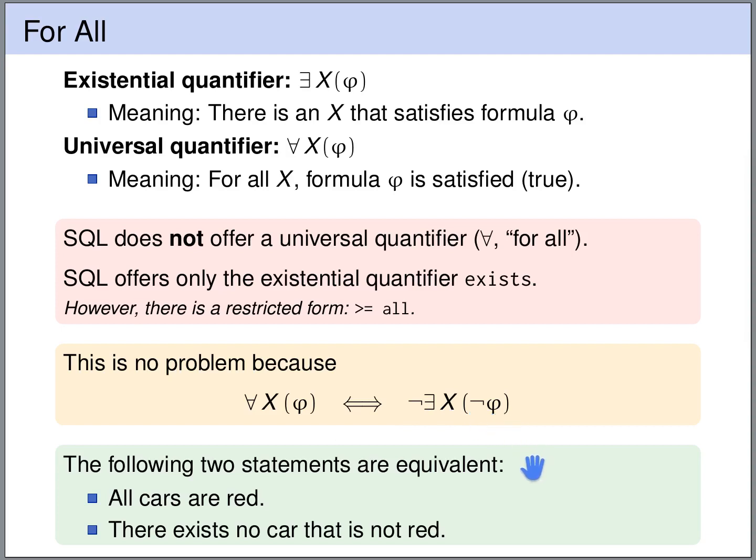It's easier to understand this as an example. The following two statements are equivalent. We can say that all cars are red. So all cars have the color red. And equivalently we can say there exists no car that is not red. If there is no car that is not red, then it means that all cars must be red. So these two statements are equivalent. That's exactly this translation. We have translated a for all statement into an existential statement.